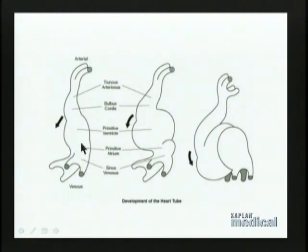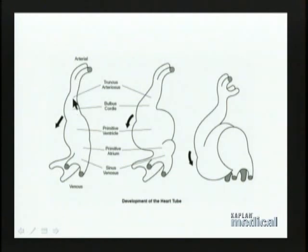The lower portion is called the sinus venosus, indicating veins. The next region is called the primitive atrium, followed by the primitive ventricle. And the uppermost portion, which we said will become arteries, is called the truncus arteriosus, indicating it's going to become arteries.